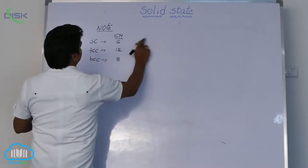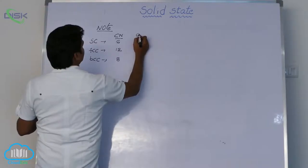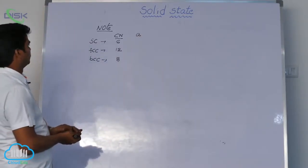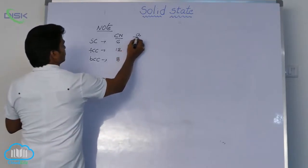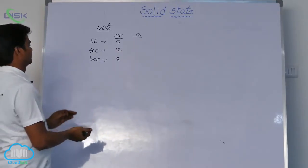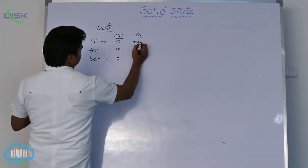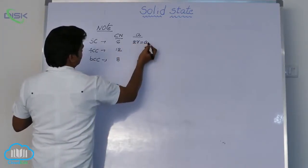Next, what is edge length A? Edge length A for simple cubic system — here, see what is the relation between edge length and radius? For this, 2R is equal to A. That means, edge length A is equal to 2R for the simple cubic system.